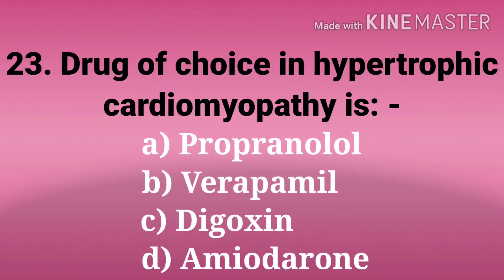The next question: drug of choice in hypertrophic cardiomyopathy is. Options are propranolol, verapamil, digoxin, and amiodarone.